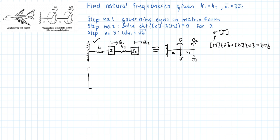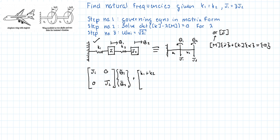The mass matrix is simply [J1, 0; 0, J2] times the vector [theta-1-double-dot; theta-2-double-dot], plus the stiffness matrix. The (1,1) entry is k1 plus k2 — the sum of all springs attached to the first disc — and the (1,2) entry is minus k2, since that spring connects mass 1 to mass 2.